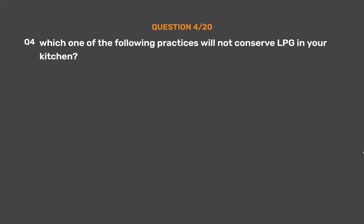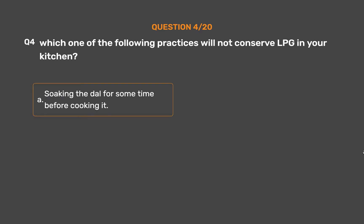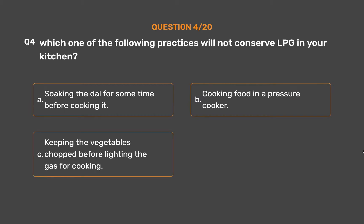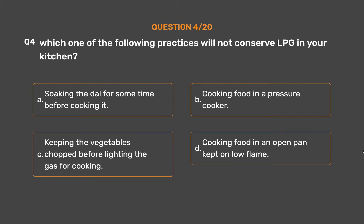Question 4: Which one of the following practices will not conserve LPG in your kitchen? Option A: Soaking the dal for some time before cooking it. Option B: Cooking food in a pressure cooker. Option C: Keeping the vegetables chopped before lighting the gas for cooking. Option D: Cooking food in an open pan kept on low flame.